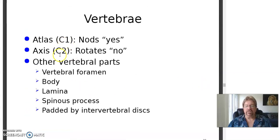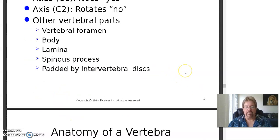C1 and C2, the atlas and axis, are quite unique. They're unlike any other vertebra and the way they're built allows us to rock our head and to rotate our head around like that. Other vertebral parts: vertebral foramina, that's the holes in there, the body, lamina, spinous process, padded by intervertebral discs.